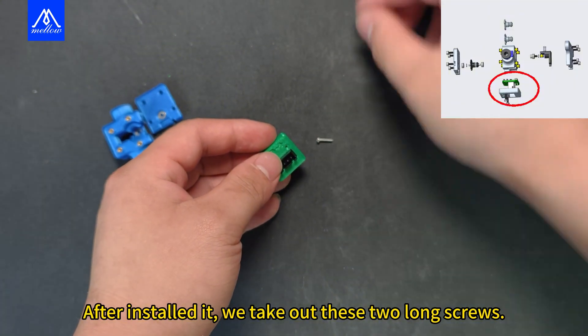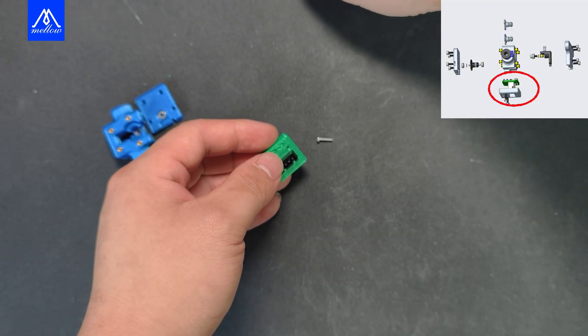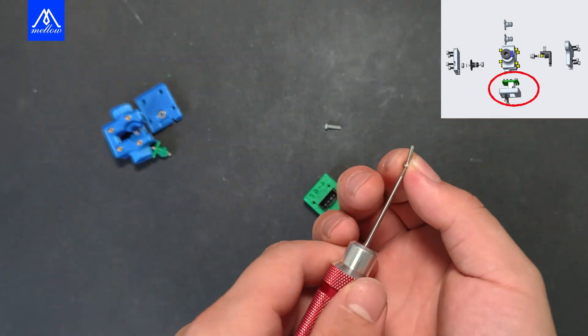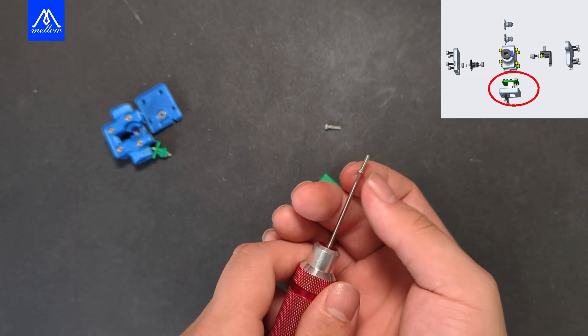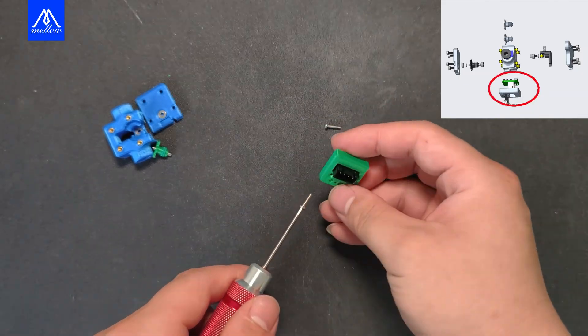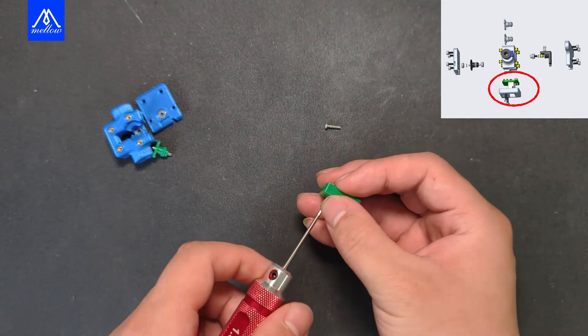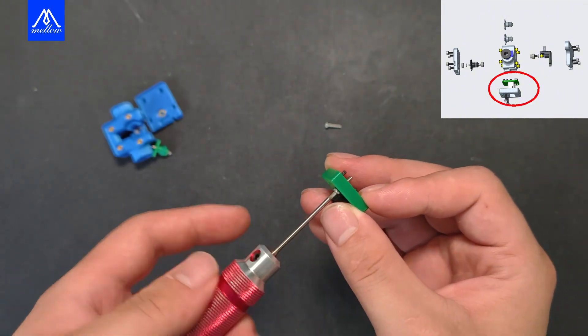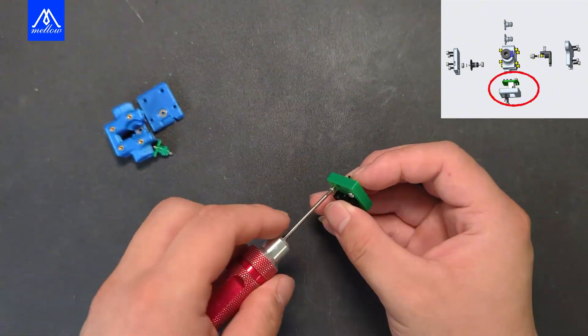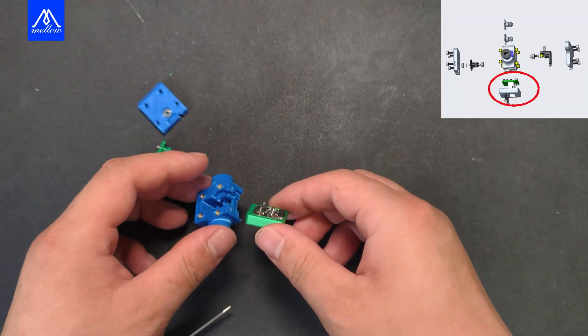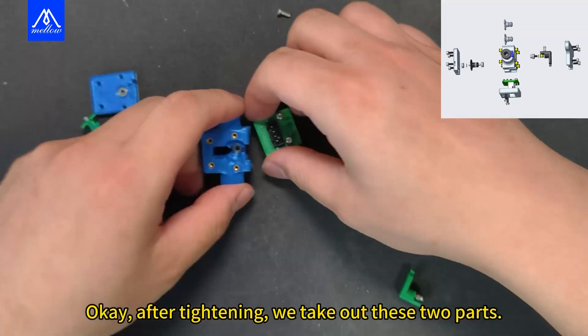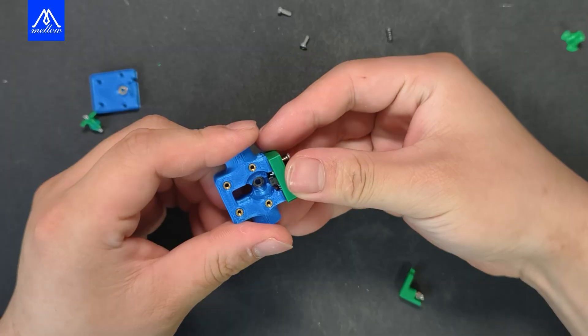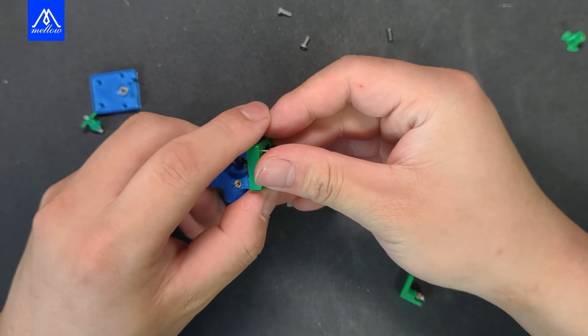After installed it, we take out these two long screws. After tightening, we take out these two screws, the two screws we just screwed in, like this.